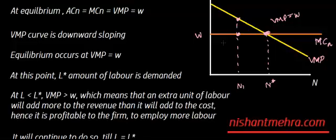When N1 is less than N*, at N* both curves intersect, meaning VMP equals W — that's the point of equilibrium employment. At N1, that additional unit of labor is adding more to revenue than to cost. So it is in the interest of the entrepreneur to keep adding more labor — and they will continue to do so until VMP equals W, that is, until N* amount of labor is employed.